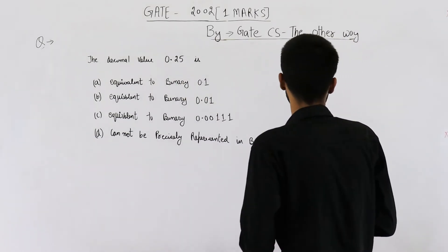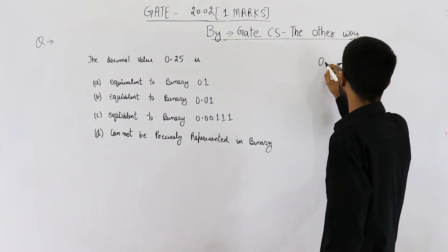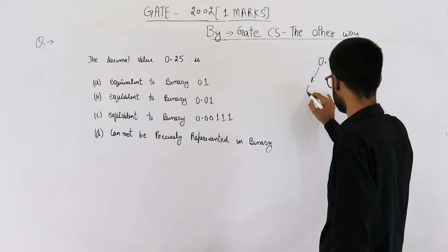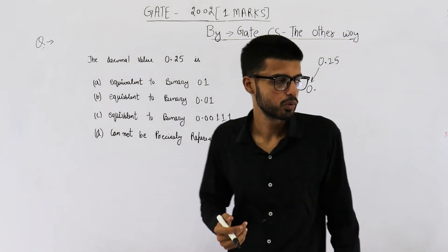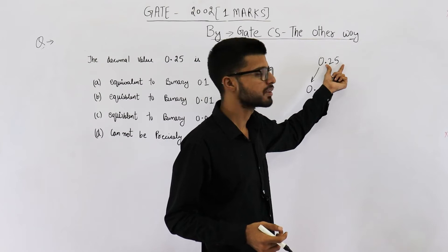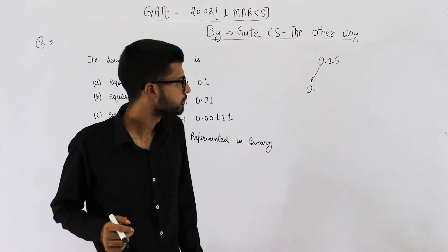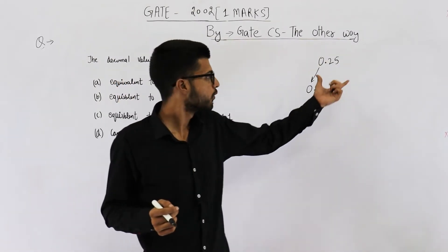Okay, 0.25. This 0 will be written as it is in binary, so 0 point. This much is the same. We need to find what is the representation of 0.25.